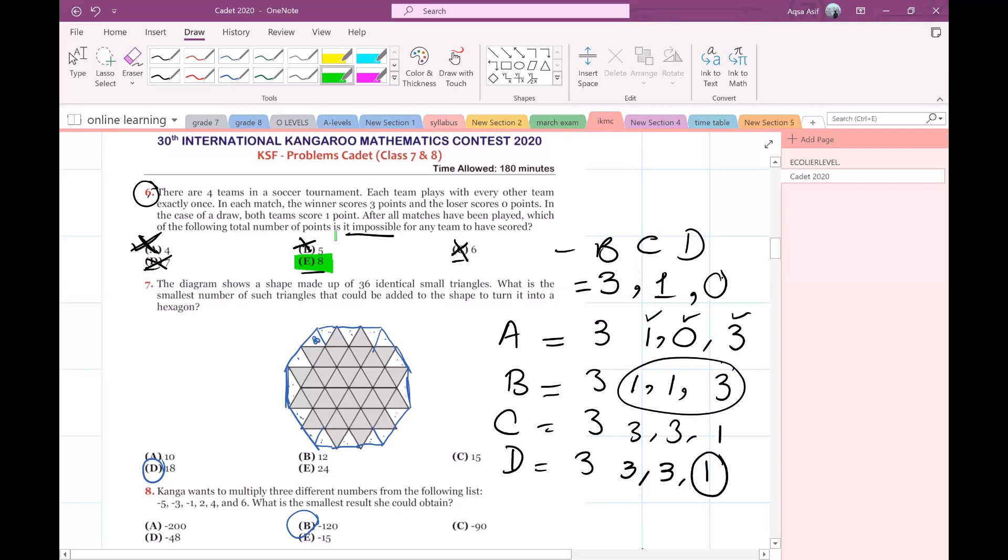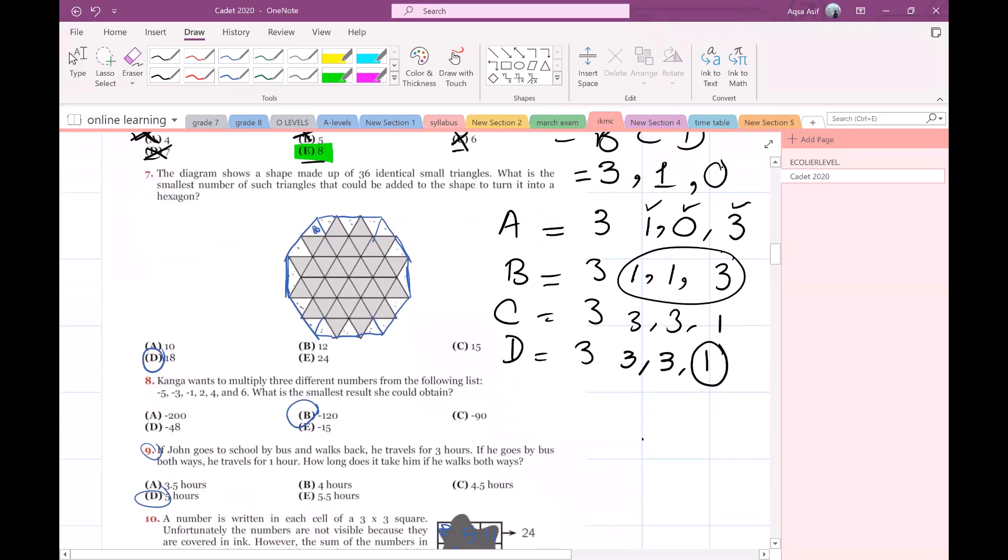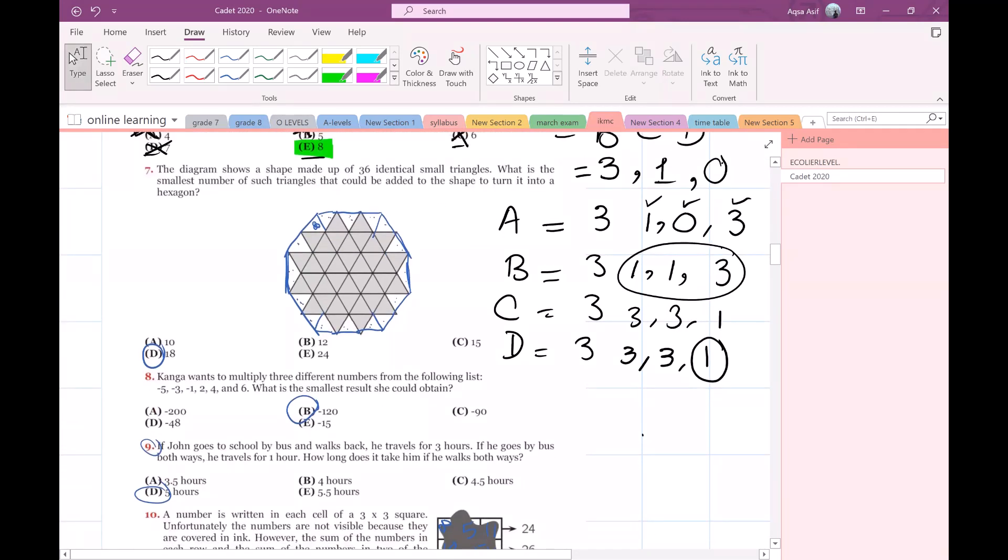Let's move forward to the next question. The diagram shows a shape made up of 36 identical small triangles. What is the smallest number of such triangles that could be added to the shape to turn it into a hexagon?